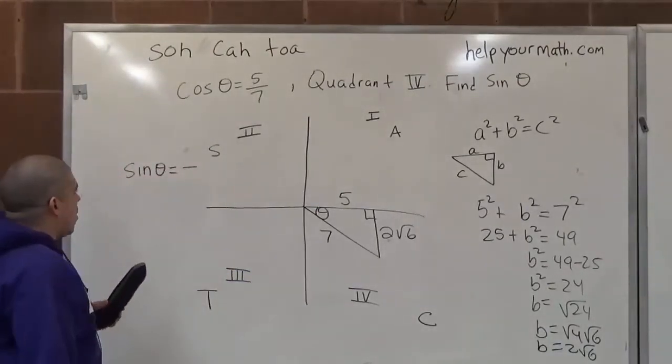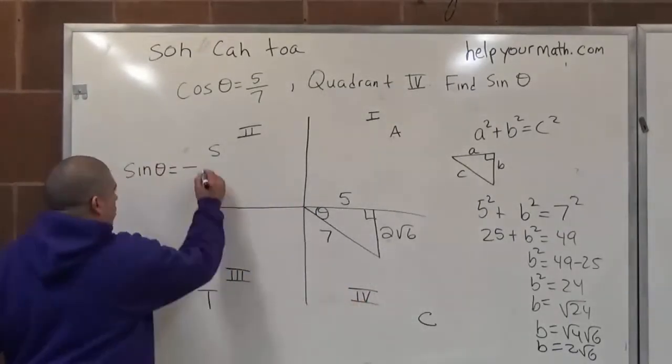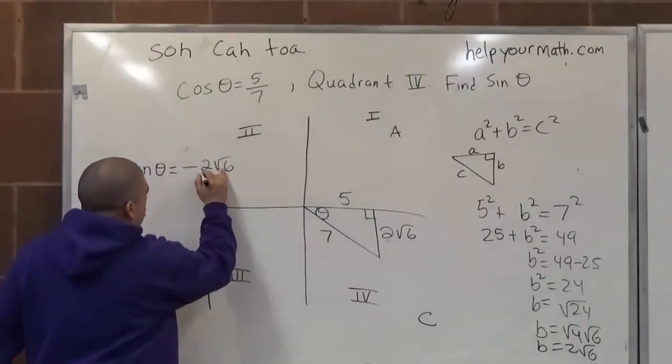So now we can say opposite over hypotenuse, which is negative 2 root 6 over 7.